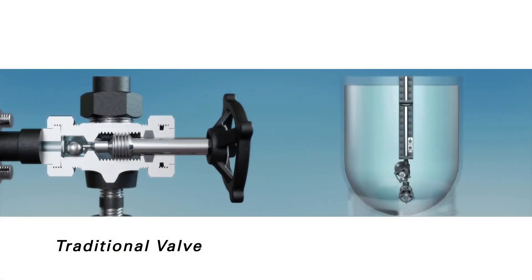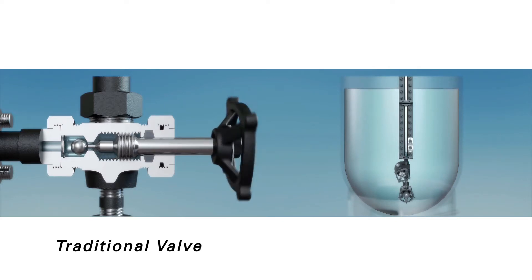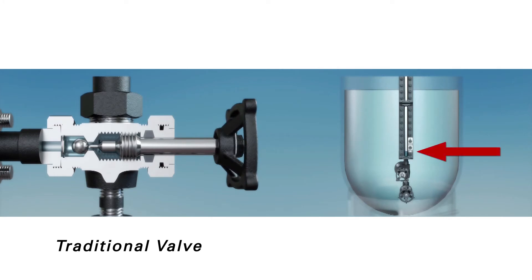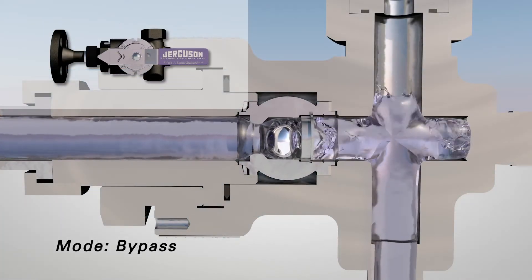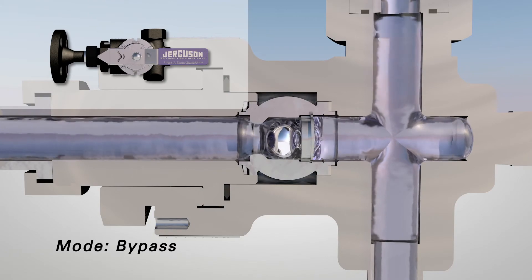When using a traditional ball check valve and commissioning a gauge assembly when there is already liquid present in the vessel, it is common for the user to open the valve too quickly, causing the ball check to engage and the level gauge to display a false level reading. As previously demonstrated, this is eliminated with the new Jurgason 360 ball check valve.